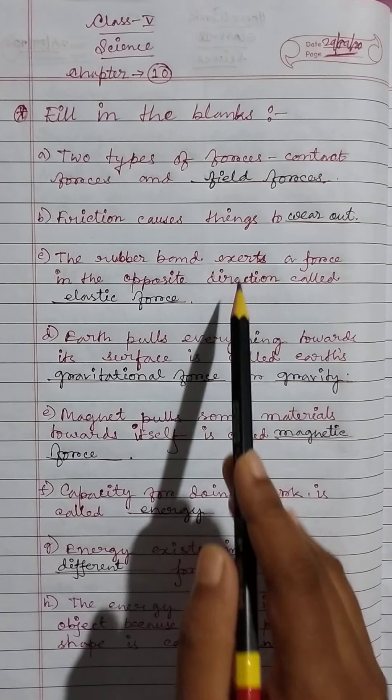Then choose the correct options: Which of the following does not work on the principle of wheel and axle? Hammer. Cranes use a pulley to lift heavy objects. A pair of scissors is an example of a lever.